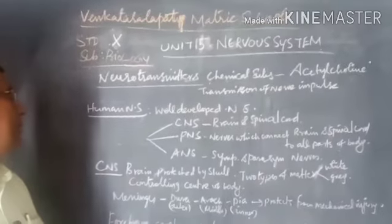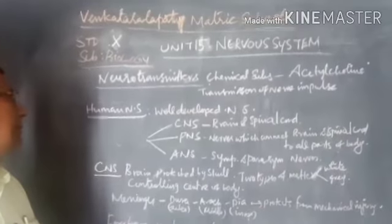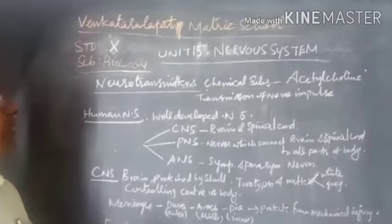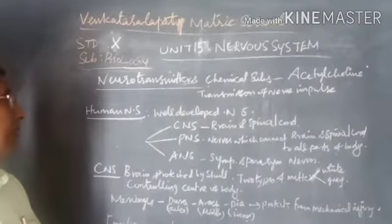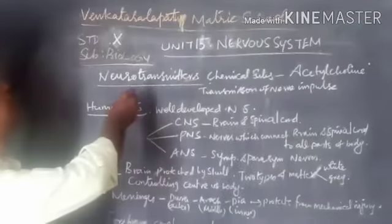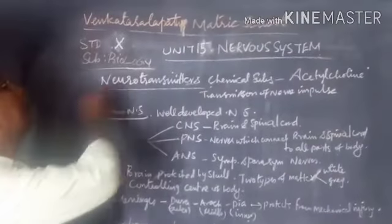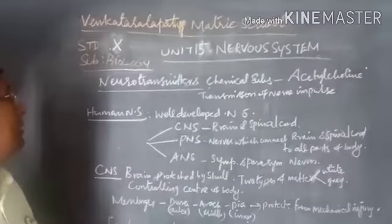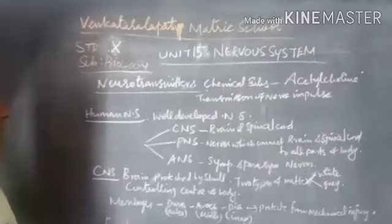We are going to see about the nervous system regarding the types of nervous system. Before we do that, what is called the neurotransmitter?